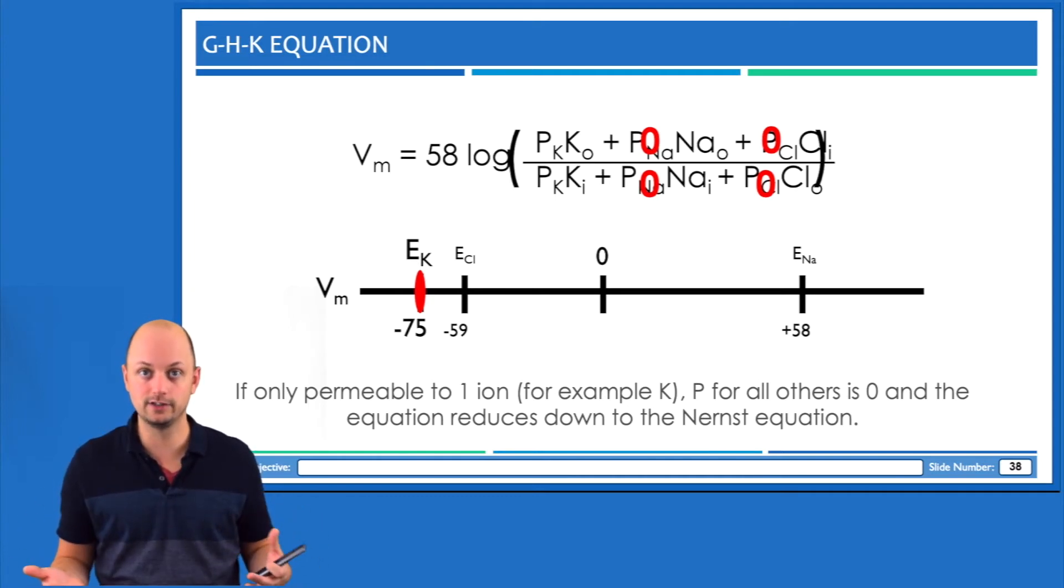Again, in that situation, it's the only situation actually where membrane potential and equilibrium potential would be the exact same thing, because we're only permeable to one ion. So now membrane potential will equal the equilibrium potential for that ion.